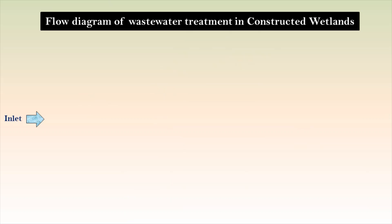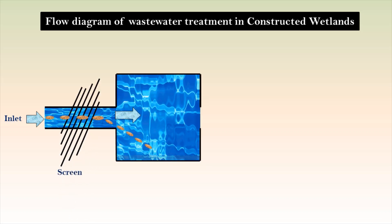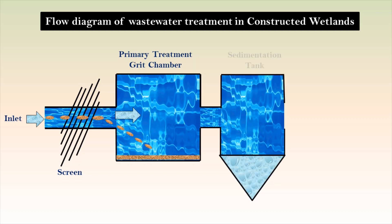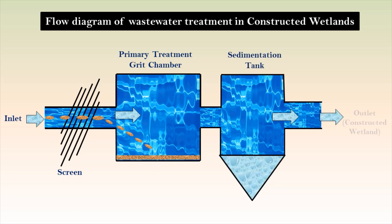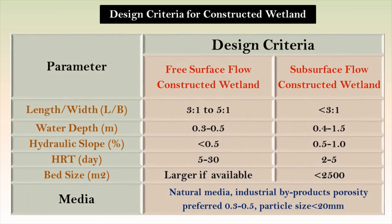A typical treatment scheme of a constructed wetlands-based sewage treatment plant consists of preliminary treatment to remove floating matter and grits, primary treatment to remove excess suspended matter, and secondary treatment using constructed wetlands to remove dissolved organic matter, nutrients, and metals.